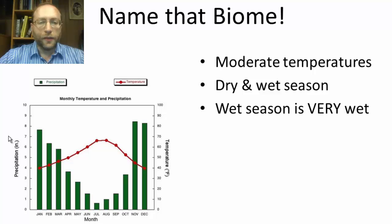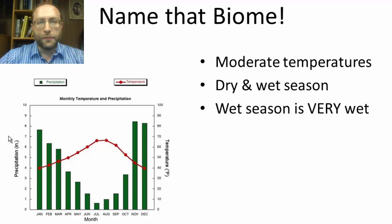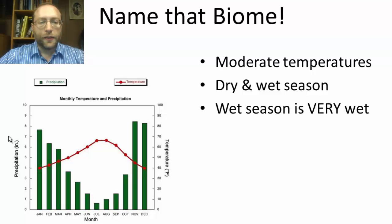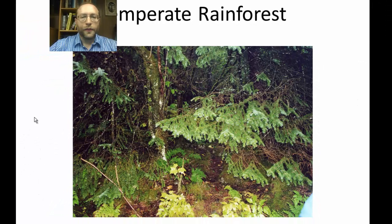Next biome. If you look at this one, we've got lots and lots of rain. Unlike the previous graphs, here we're using U.S. measurements rather than metric. The temperature in the winter months is still relatively warm — it gets close to freezing but not down to freezing. It does get relatively warm but not too warm in the summer months. So we've got seasonal fluctuations, but also lots and lots of rain. With moderate temperatures — not too hot, not too cold — and lots of rain, this is a temperate rainforest. We have lots of those along the Pacific Northwest.